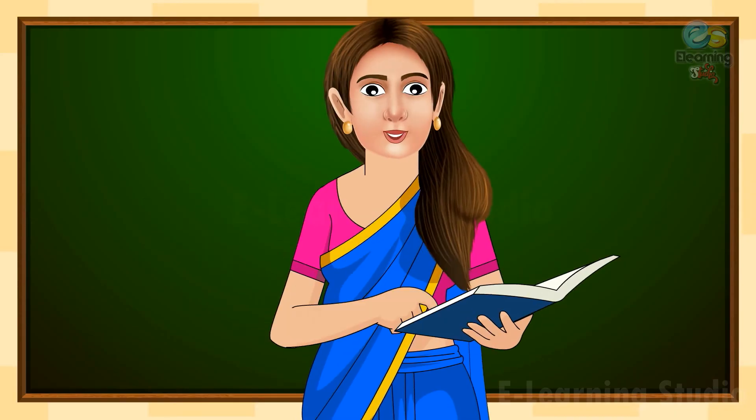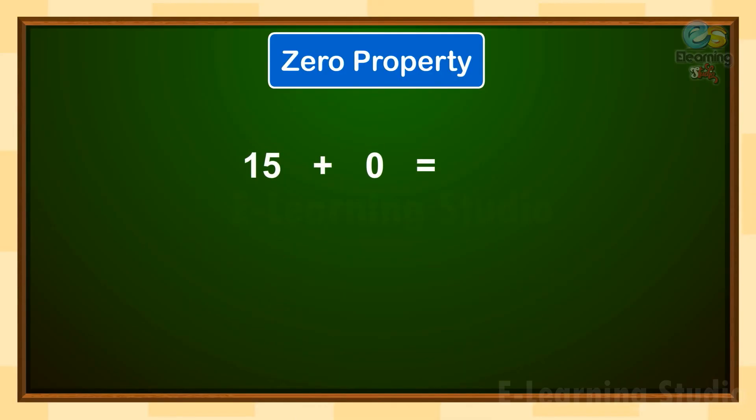Let's take this example as you can see on screen. 15 plus 0 is equal to 15. So, kids, when we add 0 to any number, like example 15 plus 0, the answer will be 15 or 0 plus 25 is equal to 25. So, when we add 0 to 25, the sum is also 25.